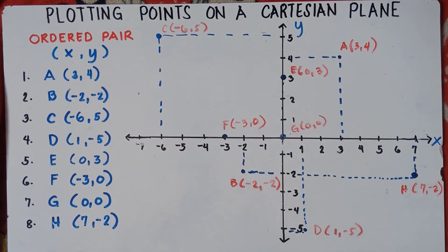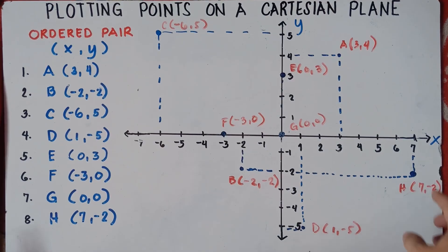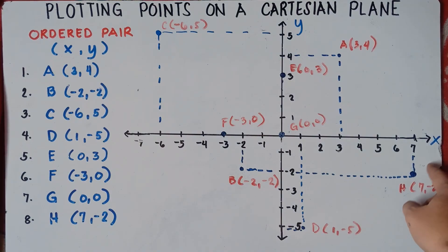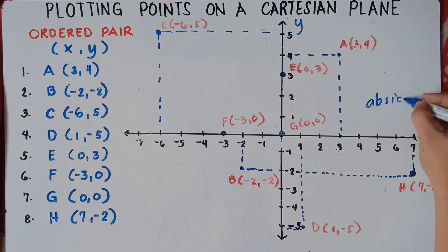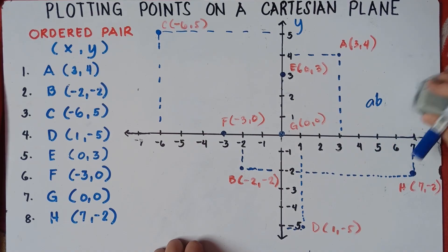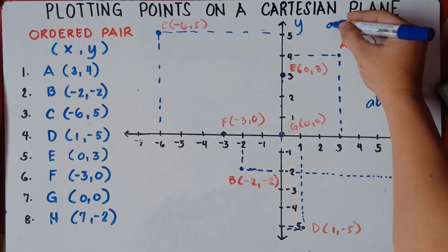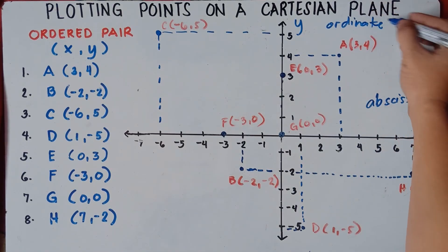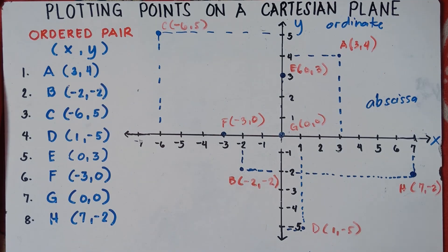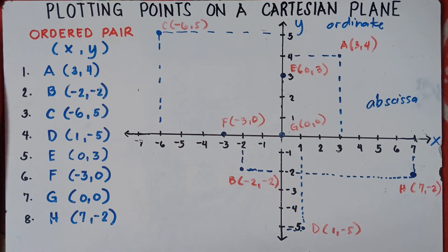That's how you plot points on the Cartesian plane. Once again: x is the horizontal line, and y is the vertical line. The x-axis can also be called the abscissa, and the y-axis can be called the ordinate. If you have questions, please leave a comment. If you like this video, don't forget to subscribe and share it with your friends. This is teacher MJ — bye-bye for now!